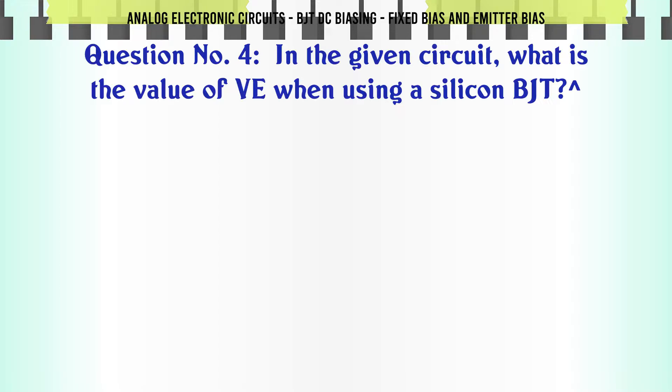In the given circuit, what is the value of VE when using a silicon BJT? A: 2.01 V. B: 0.28 V. C: 0 V. D: 2.28 V. The correct answer is 2.28 V.